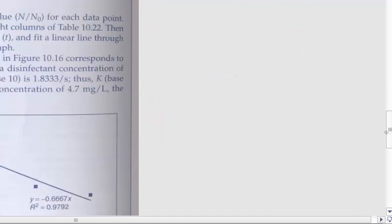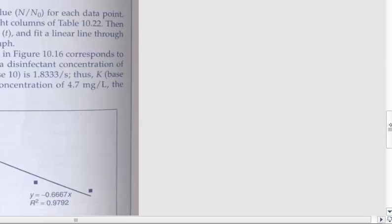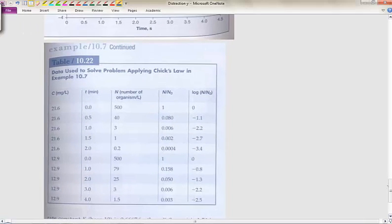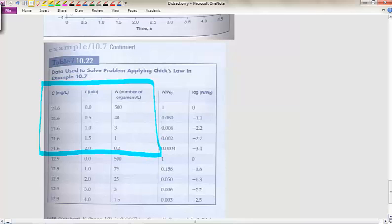Given the data in the first three columns in table 10.22, we are looking at this set of data here. We have one example or one instance, and then we have another instance right here. This would be concentration, the dose that we have put into this system of chlorine, milligrams per liter. Then we have the time and the number of microorganisms that were alive, number of organisms per liter for each one of these time intervals. Going from 500 to 0.2. Here we have a lower dose, and so time, and we have 500 to 1.5.